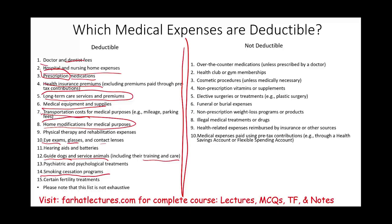What is not deductible? Over-the-counter items not prescribed by a doctor; health club and gym memberships; cosmetic procedures (unless medically necessary); non-prescription vitamins or supplements; elective surgeries and elective treatments; funeral or burial expenses; non-prescription weight loss programs; illegal medical treatment or drugs; and health-related expenses reimbursed by insurance, an HSA, or a flexible spending account.